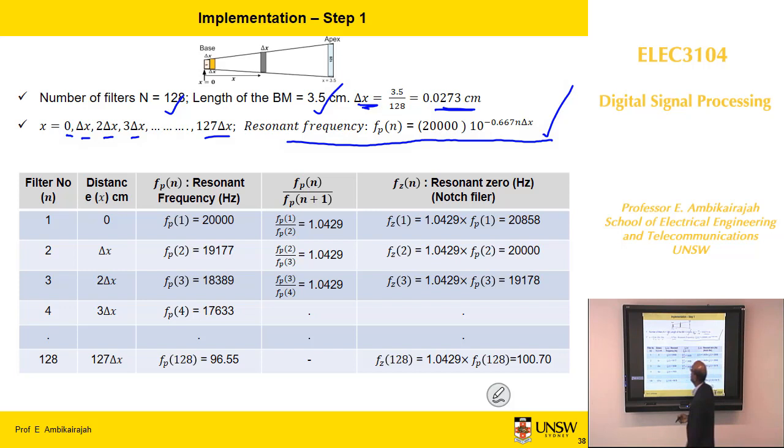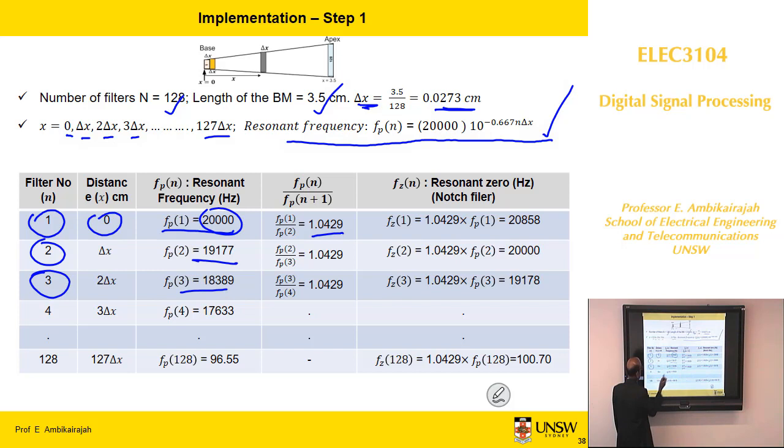If you calculate them right and your first filter is distance x is equal 0 and fp1 from that equation is 20,000. And then you do the fp2 and that's that. And third one is that one. Like that you have 128 frequencies. The last frequency is 96 hertz. You can go further down, 128, 129, 130.